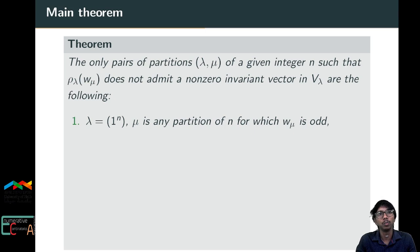Our main result classifies all pairs of partitions (λ, μ) of a given integer n such that ρ^λ(w_μ) does not admit a non-zero invariant vector in V^λ. The first case is the sign representation with μ any partition of n for which the permutation w_μ is an odd permutation.